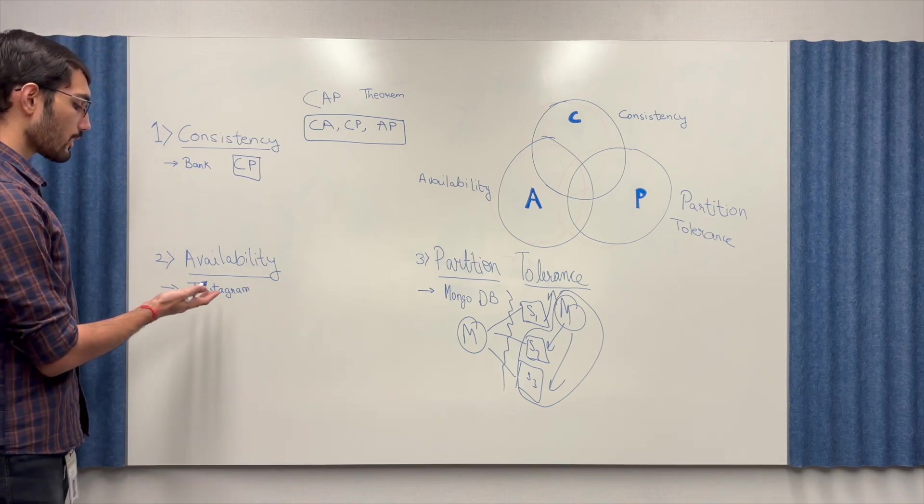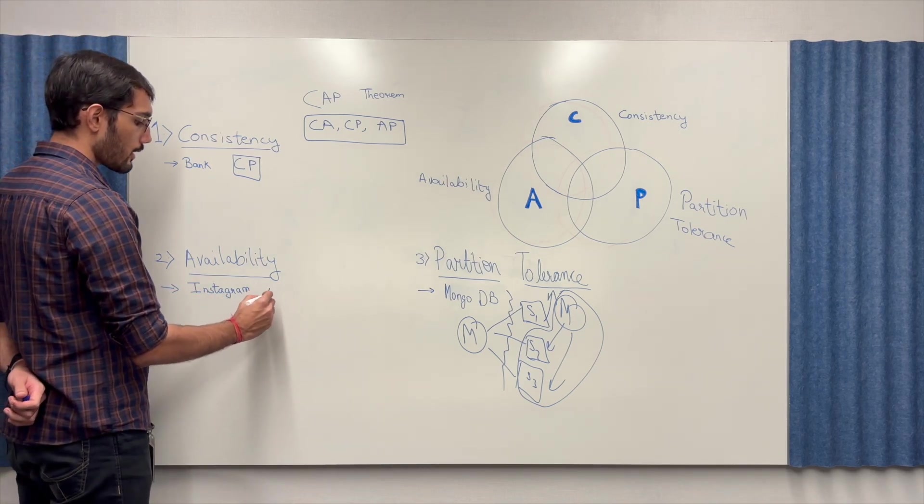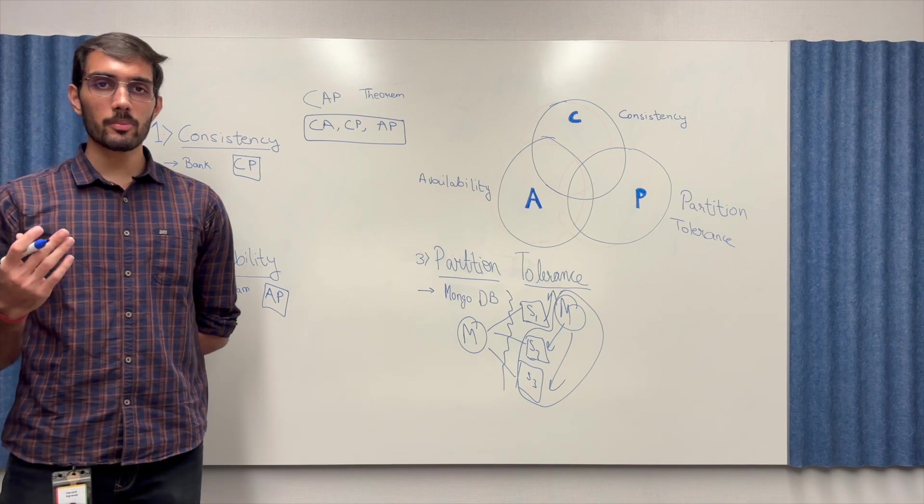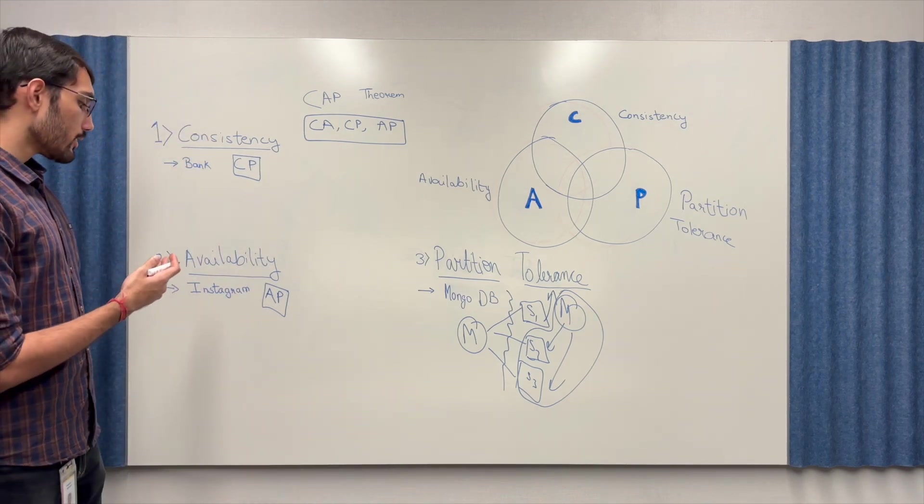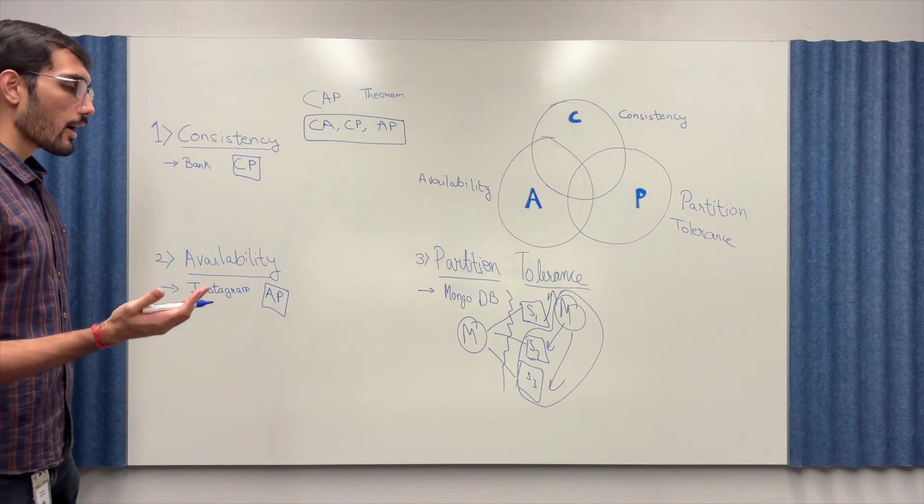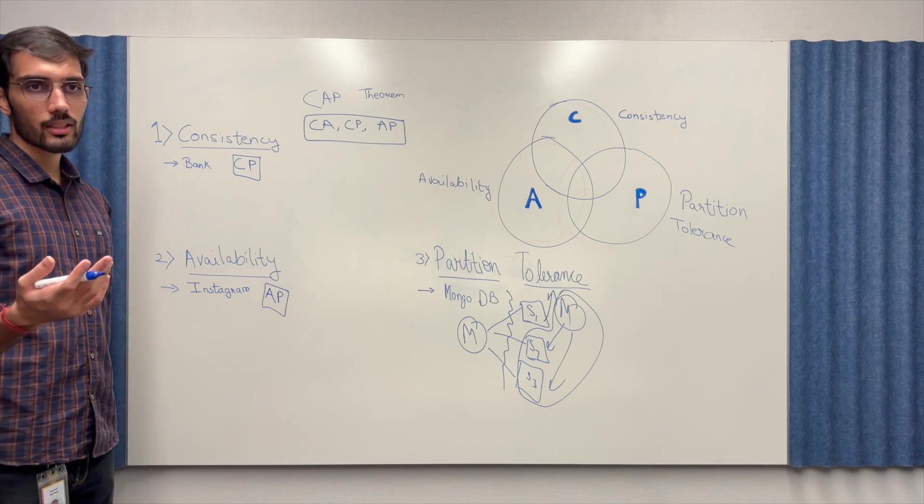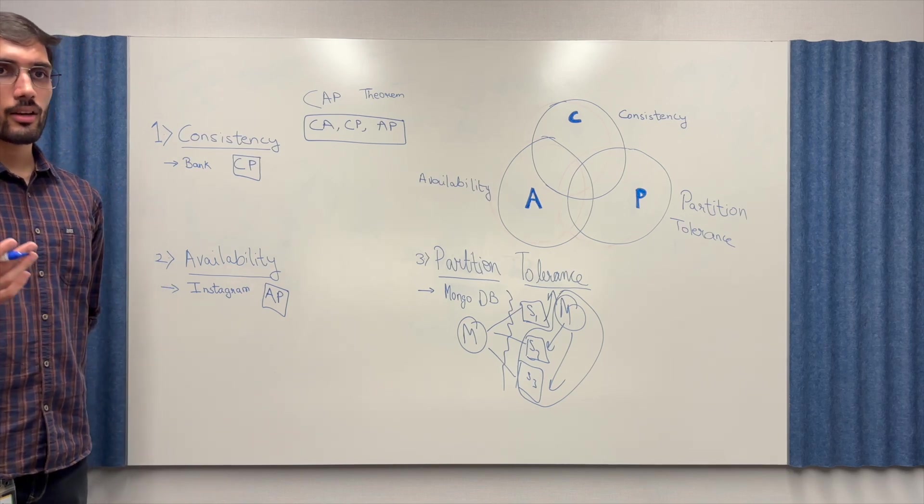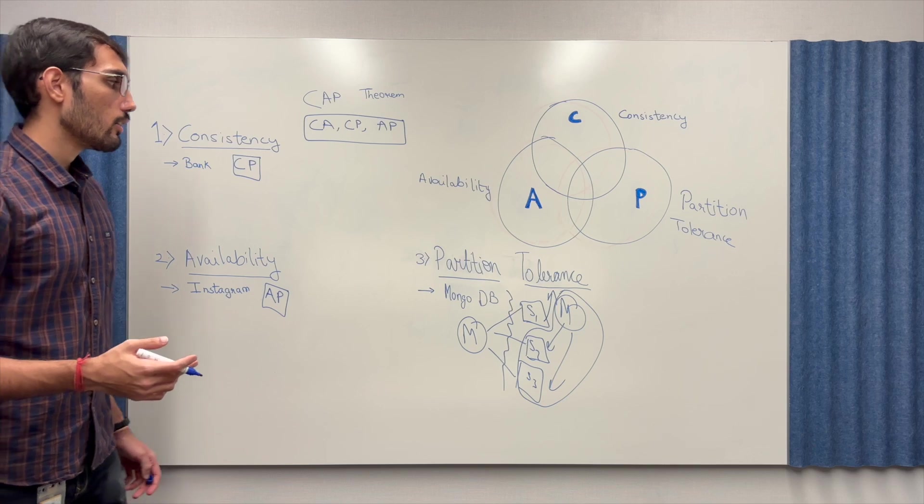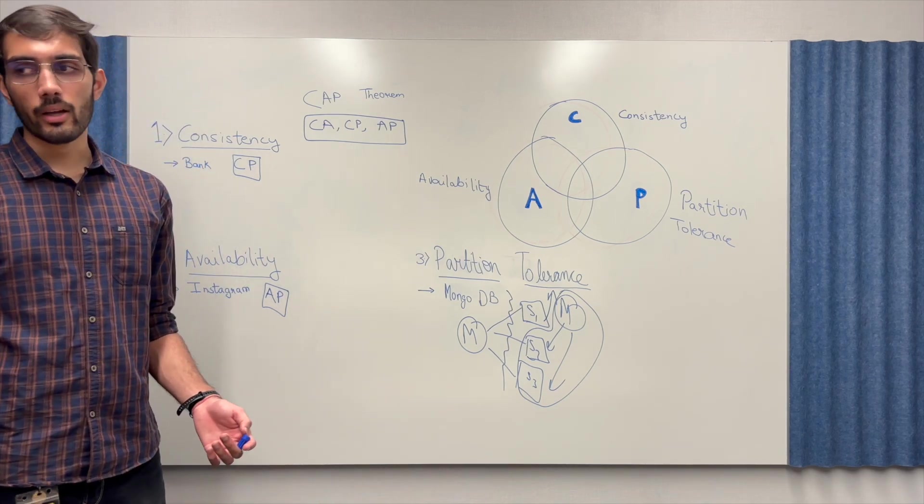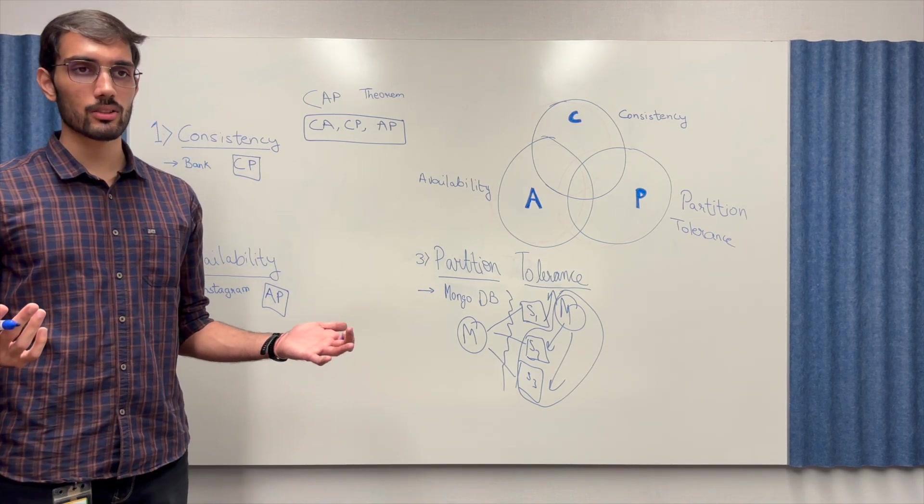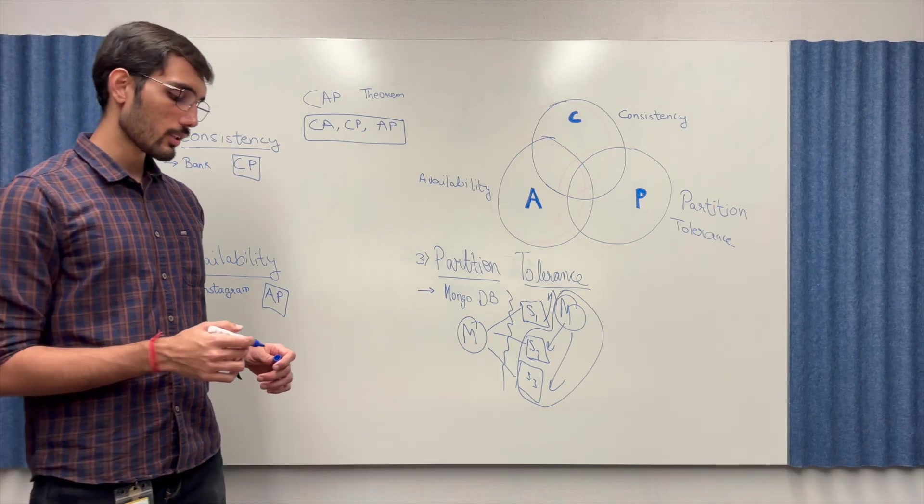Next is Instagram. Now Instagram is mostly an AP system. What that means is it's available and it's partition tolerant. So as I already mentioned it's available because the likes that you're sending in you're always able to send in and same for partition tolerance even if the half portion of Instagram goes down it recovers itself and there's no loss of data that essentially occurs for the users. Think of it like you're trying to upload a photo and your server goes down. Instagram recovers and reroutes your request to a different server and the network loss is recovered.